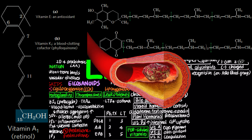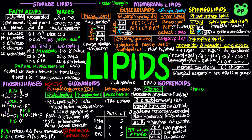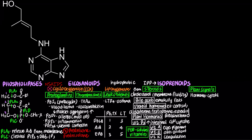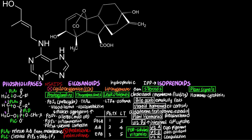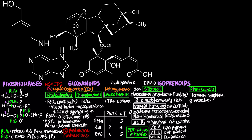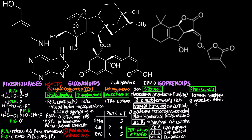Besides brassinosteroids, several other plant hormones are also isoprenoids, including cytokinin, which promotes cell division; gibberellins, which promote plant development; abscisic acid, which promotes dormancy and enhances drought tolerance; and strigolactones, which promote mycorrhizae association.